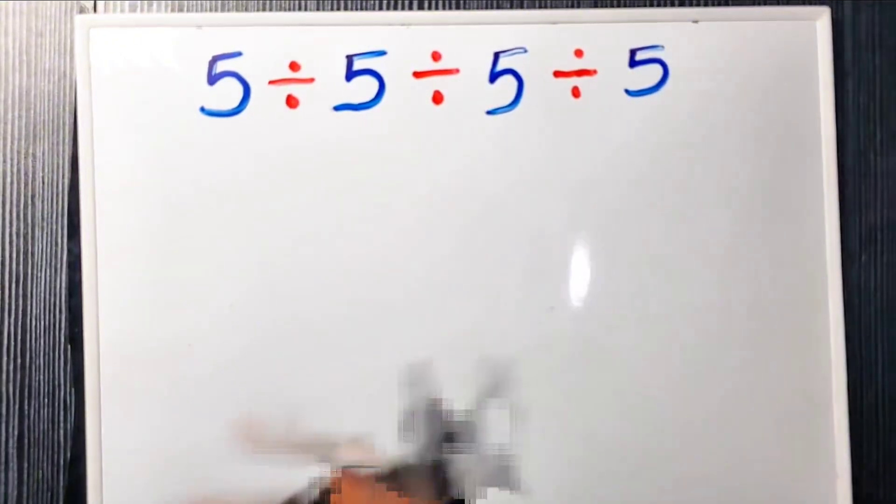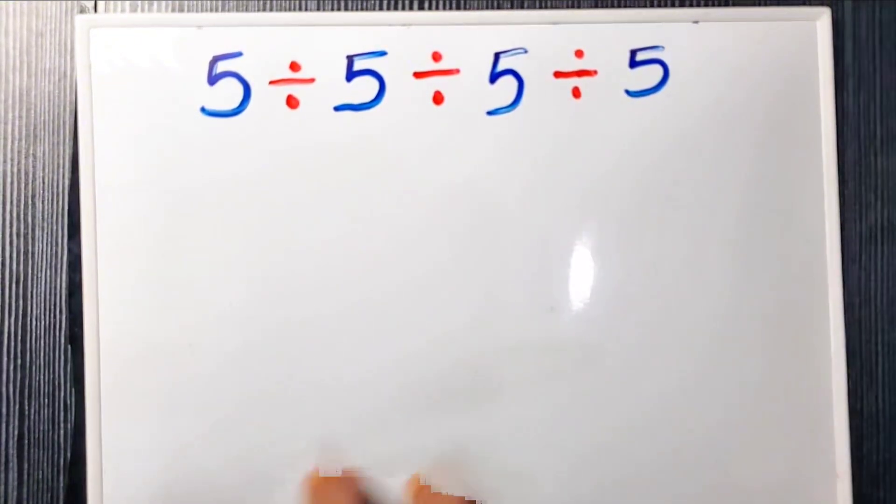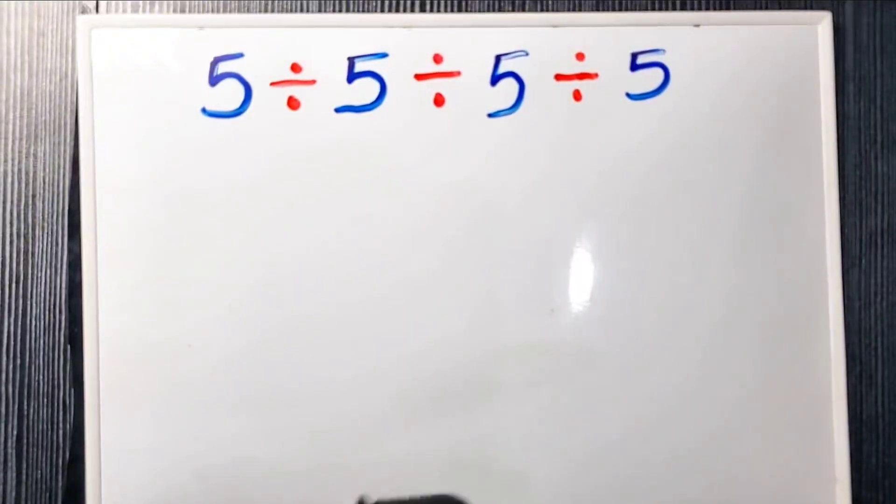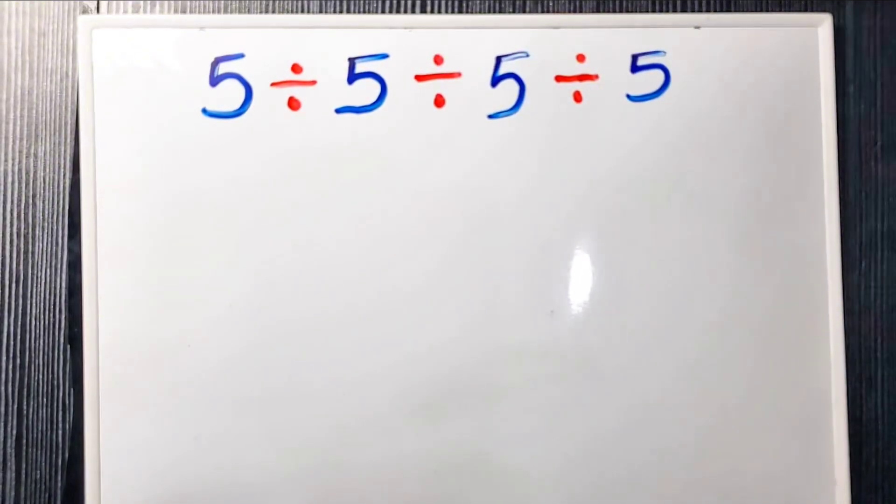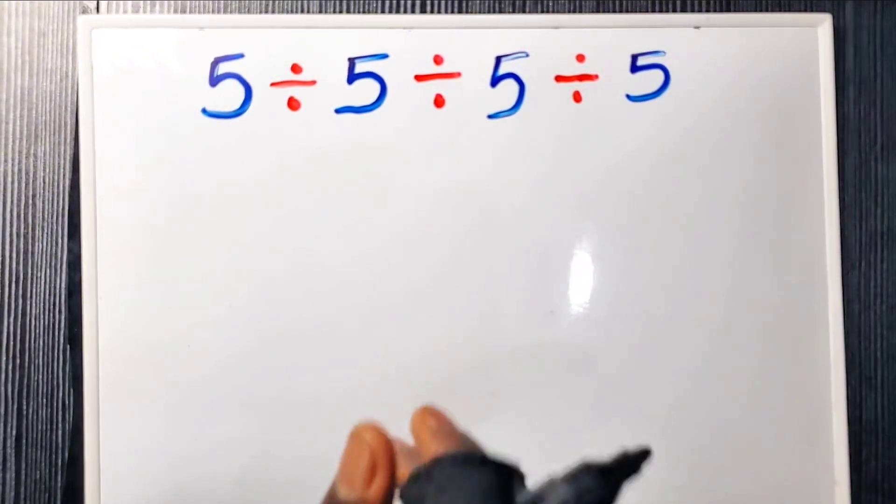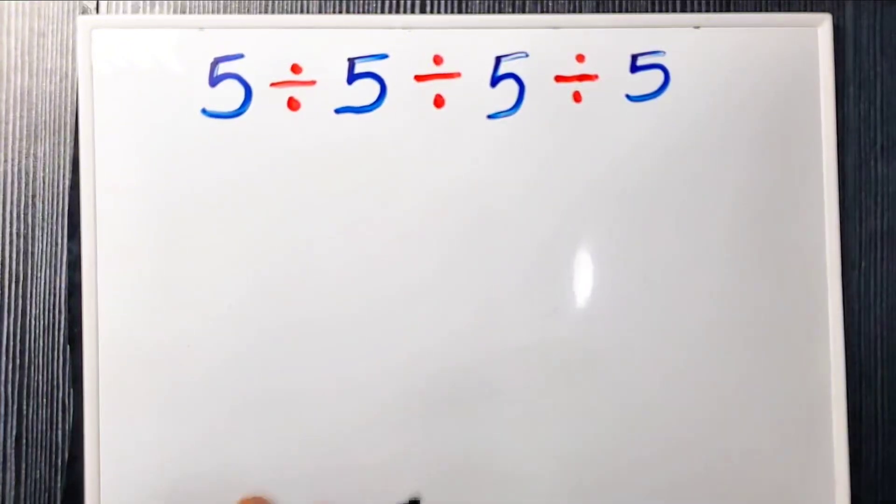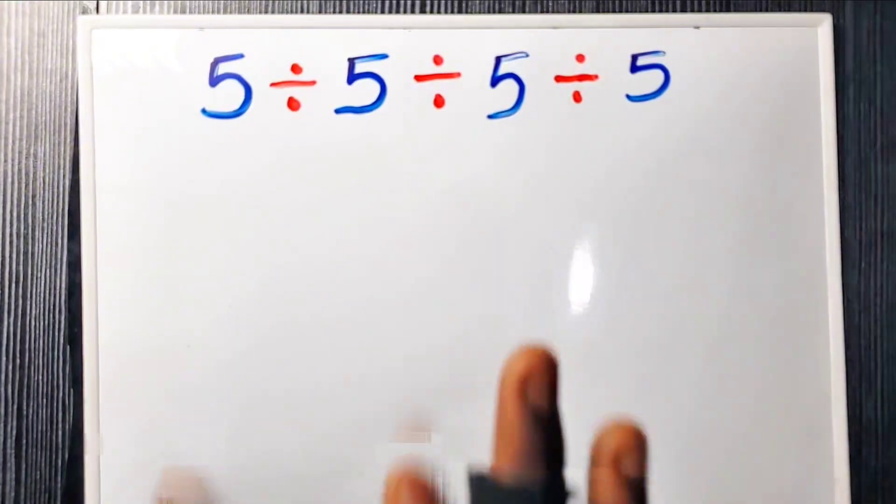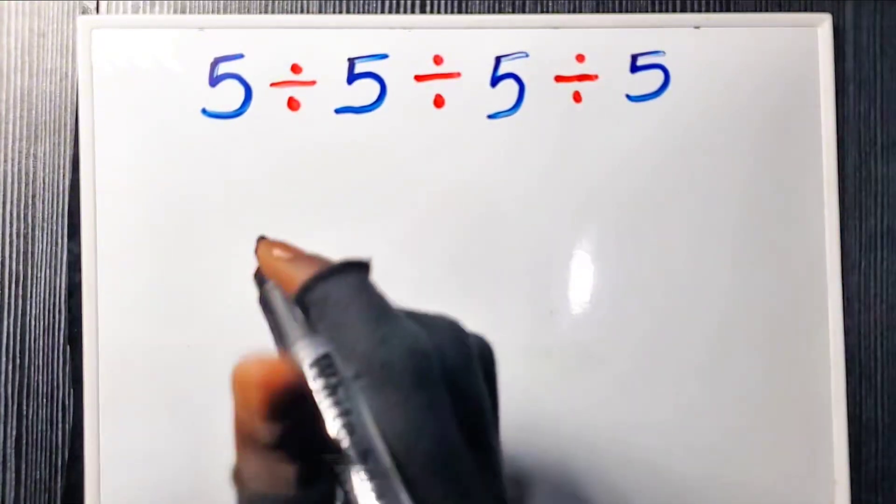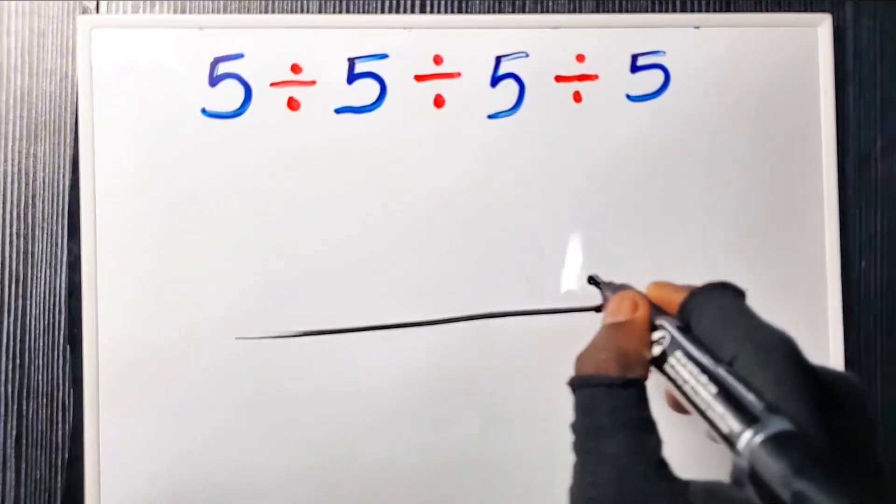To solve this correctly, we must follow the strict order of operations: PEMDAS or BODMAS. Since there are no parentheses and only divisions, the rule is simple: left to right.